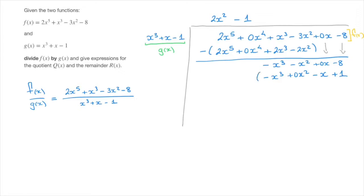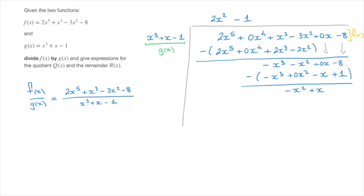We subtract this entire expression from the row above it. −x³ − (−x³) = 0. Then −x² − 0x² = −x². We then have 0x − (−x) = 0x + x = +x. Finally, −8 − (+1) = −8 − 1 = −9. And we're done.